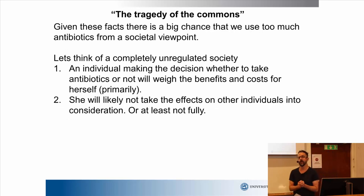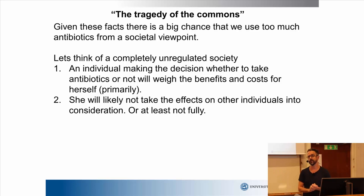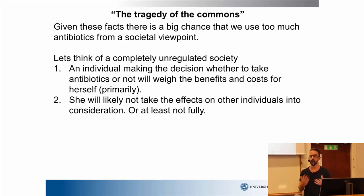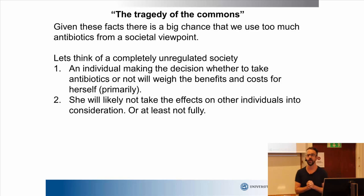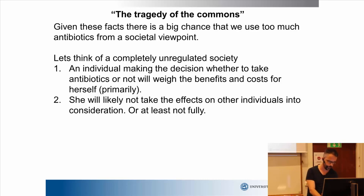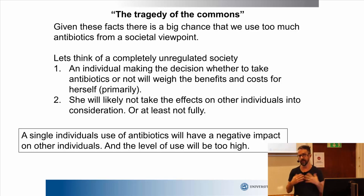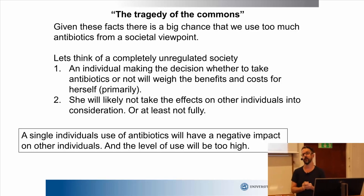A collective action problem, or a tragedy of the commons problem, is the fact that people, when they decide whether they want to use antibiotics or not, are basically going to compare the benefits and costs for themselves — what is the cost of being sick, what's the cost of taking antibiotics, what are the benefits. They would not tend to take into consideration what would happen with society or other people. And because of that, they will tend to use too much antibiotics from a social point of view. That is what we call a tragedy of the commons. The level of antibiotic use in an unregulated society would be too high, and there would be too much antibiotic resistance.